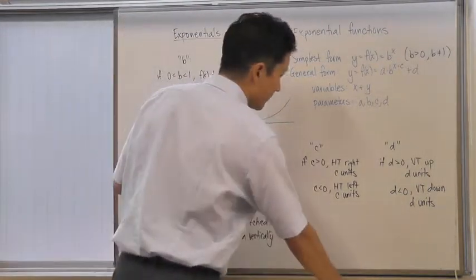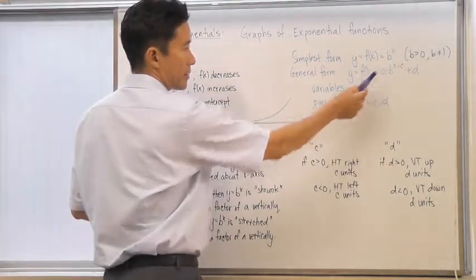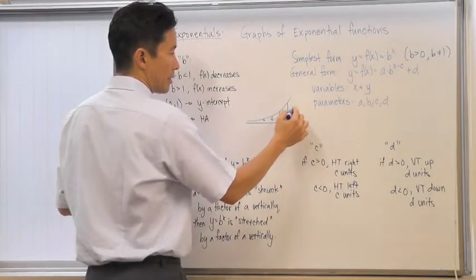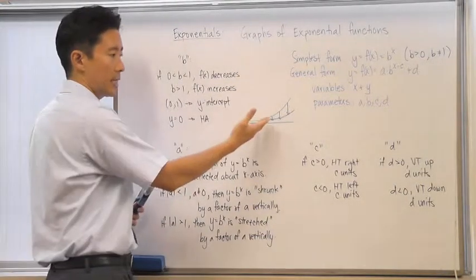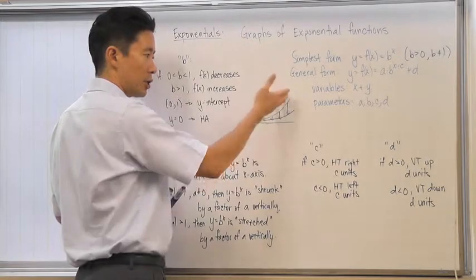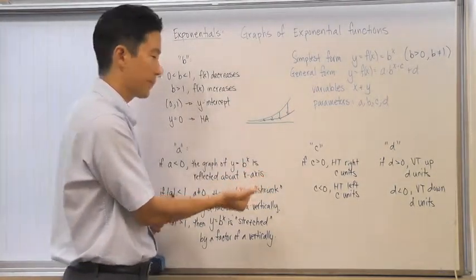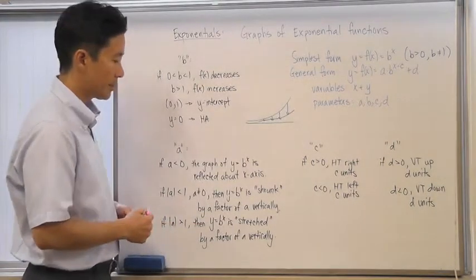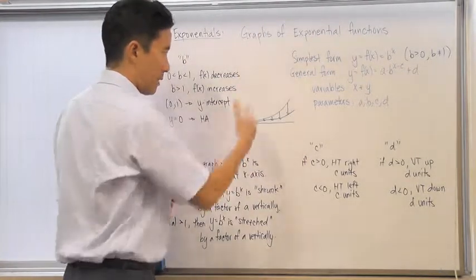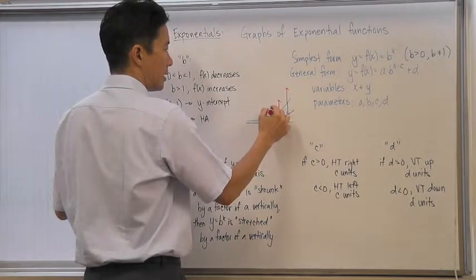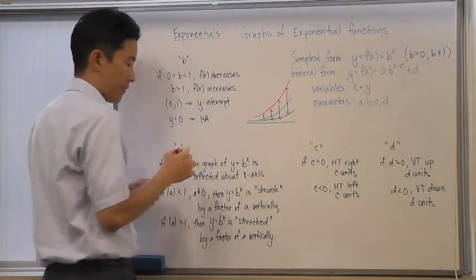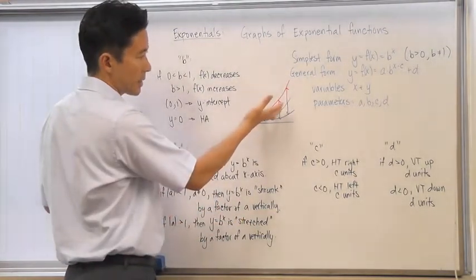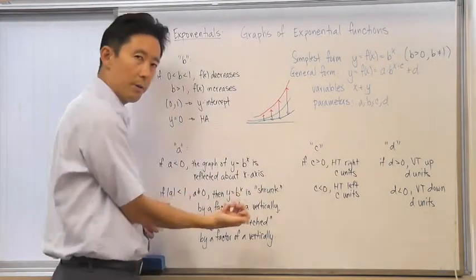For example, if the a value is one half, then the function shrinks by a factor of one half, so the increase is less. If a is negative one half, you still get that shrinking, but in addition you also get the reflection because a is negative. On the flip side, if a is greater than 1, you stretch the function so the increase is more — the function increases more quickly. And if a is, say, negative 3, the factor of 3 stretches it while the negative flips it above the x-axis.